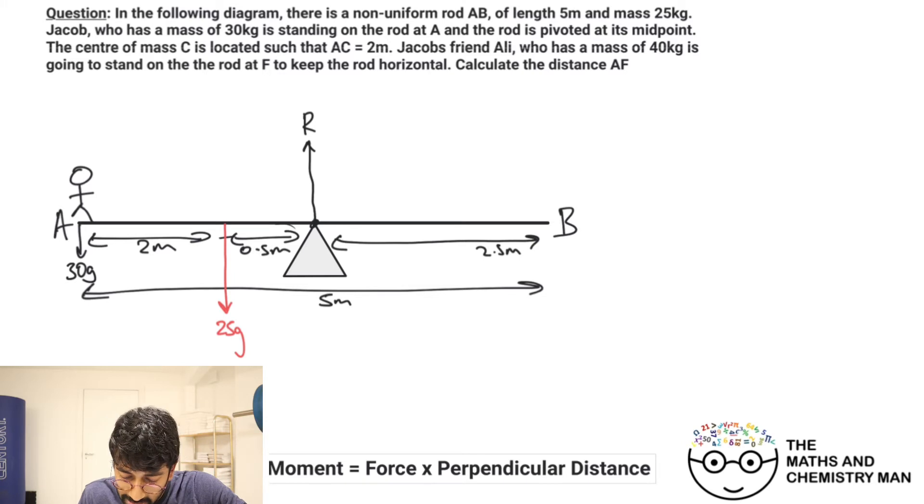Let's just put Ali over there. The distance will go from A all the way to there. We'll call it x because we don't know what it is, and this point that he's standing at is F. What we've actually got to do here is calculate this distance AF.